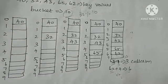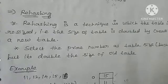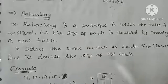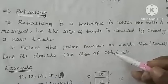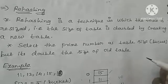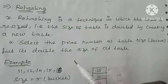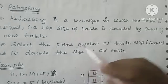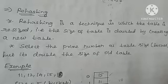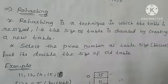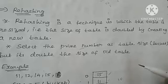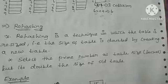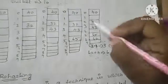Rehashing is a technique where we resize the table — we double the size of the old table and then select a prime number as the new table size. A new table is created with double the size of the old table. Rehashing is used when too many collisions occur, for example when using linear probing and many positions are filled.